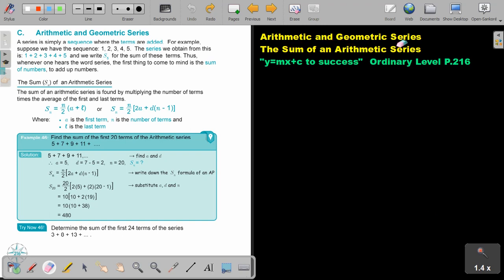Arithmetic and Geometric Series. In this video we are going to focus on the sum of an arithmetic series. You will find this on page 216 in the Namibia Ordinary Level Mathematics textbook Y equals MX plus C to success. A series is simply a sequence where the terms are added. For example, suppose we have the sequence 1, 2, 3, 4 and 5. The series we obtain from this is 1 plus 2 plus 3 plus 4 plus 5 and we write S5 for the sum of these terms. Whenever one hears the word series, the first thing to come to mind is the sum of numbers, to add up numbers.